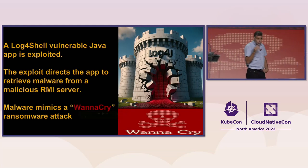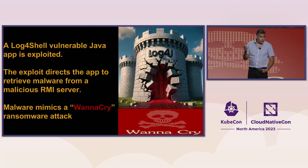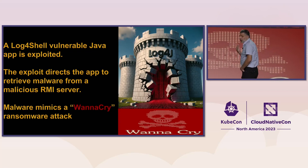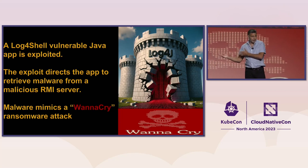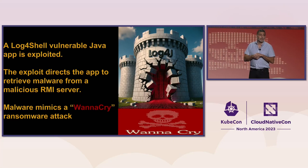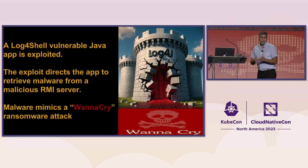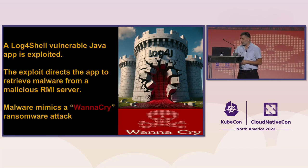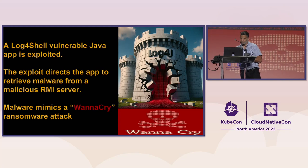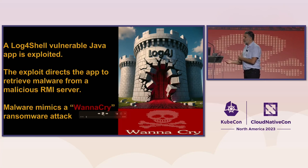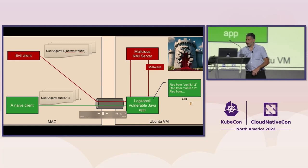The demo we're going to use is Log4Shell. I'd expect most of you to be familiar with it — it was very well known a couple of years ago. We took the Log4Shell attack, which would install WannaCry ransomware — we'll mimic WannaCry being installed on a system — and then we'll see how we can stop it with security behavior analytics, with Guard. The question is: do we need to wait for the signatures for Log4Shell, or can we stop it in advance?